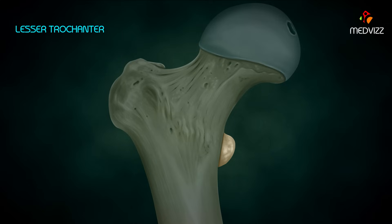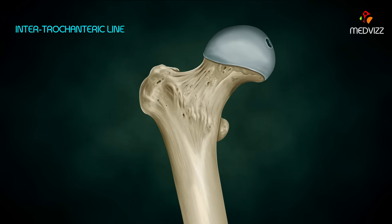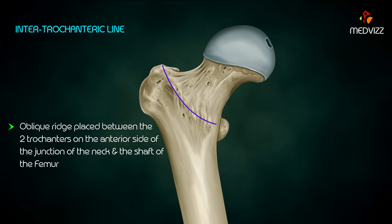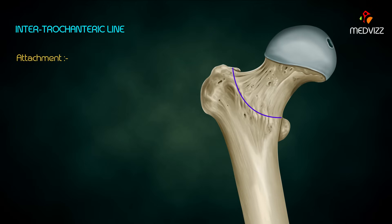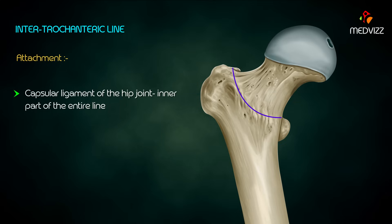The lesser trochanter is a blunt conical prominence at the inferior medial part of the junction between the neck and the shaft; it faces backwards and medially. The intertrochanteric line is an oblique ridge placed between the two trochanters on the anterior side of the junction of the neck and shaft. The capsular ligament of the hip joint is attached to the inner part of the entire line, and the iliofemoral ligament lies outside the capsular ligament.